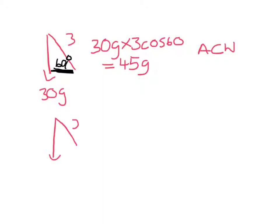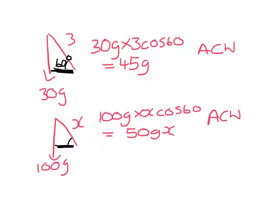The man is x meters up. We have 100g. Again the distance that I am adding is beside the angle. So that is 100g times x cos60 which is 50gx. That is also anti-clockwise.